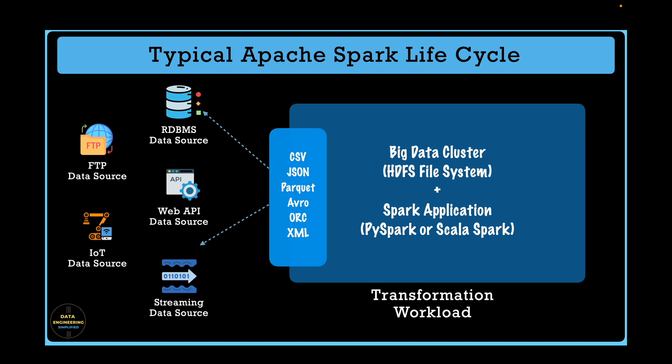If you have a file format other than those listed, your Snowpark application cannot handle that. Neither does it have any provision to manage it, as it does not allow any custom file formats. For example, if you have multiple CSV files zipped as a single unit, or you have a sequence file, these files cannot be read or processed using Snowpark. You need to think through your architecture before considering Snowpark when such use cases come your way.